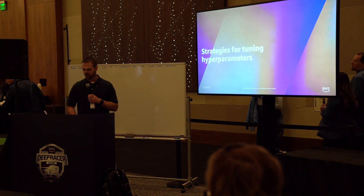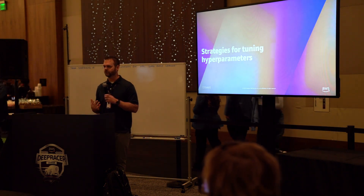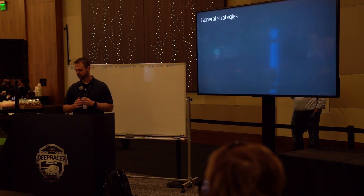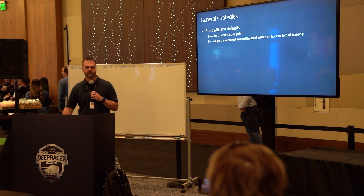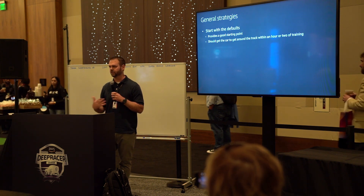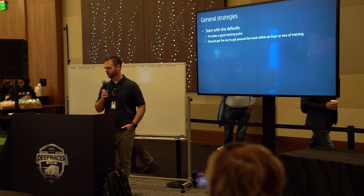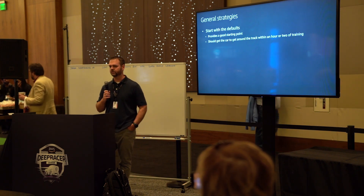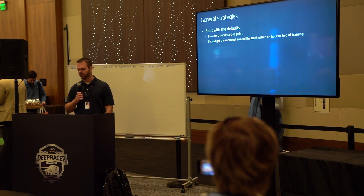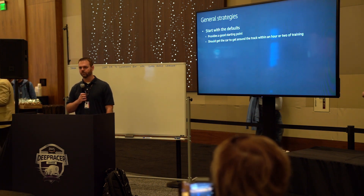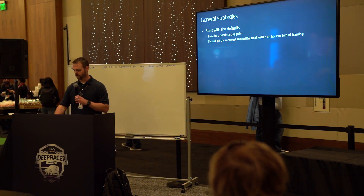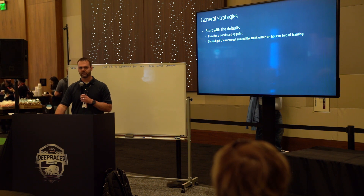We've gone over the available hyperparameters. Now we're going to talk about some strategies for how you can tune your own hyperparameters for training. The first thing I would do, especially if you're new to DeepRacer, is stick with the defaults. The defaults have been predetermined by the AWS team who actually built this, and it's a good starting point — it's pretty much guaranteed to get you around the track. Once you start making laps around the track, then you can start to play with the different settings and see what it does.